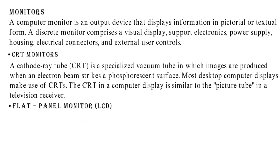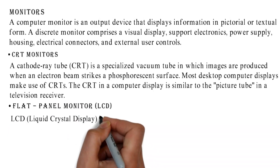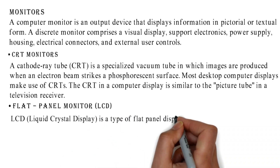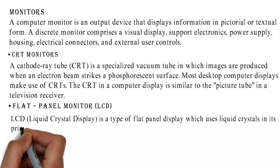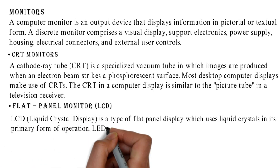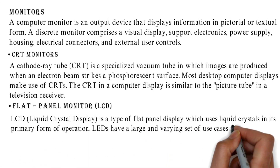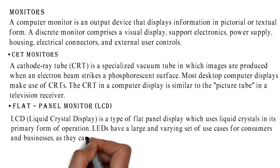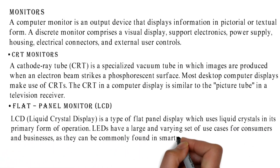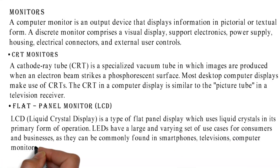Flat panel monitor — LCD. LCD, liquid crystal display, is a type of flat panel display which uses liquid crystals in its primary form of operation. LEDs have a large and varying set of use cases for consumers and businesses, as they can be commonly found in smartphones, televisions, computer monitors, and instrument panels.